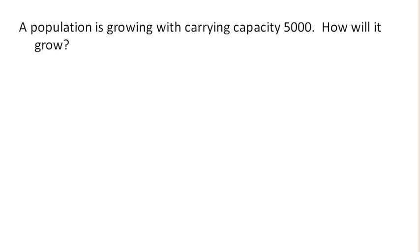So we got a population, but it's growing with a carrying capacity of 5,000. Now this means that as the population grows, the environment that it's growing in can only sustain a population of 5,000, which means if the population is under 5,000, it can safely grow. But if the population were to get over 5,000, there wouldn't be enough food or resources for the population to survive. And so something interesting happens here.